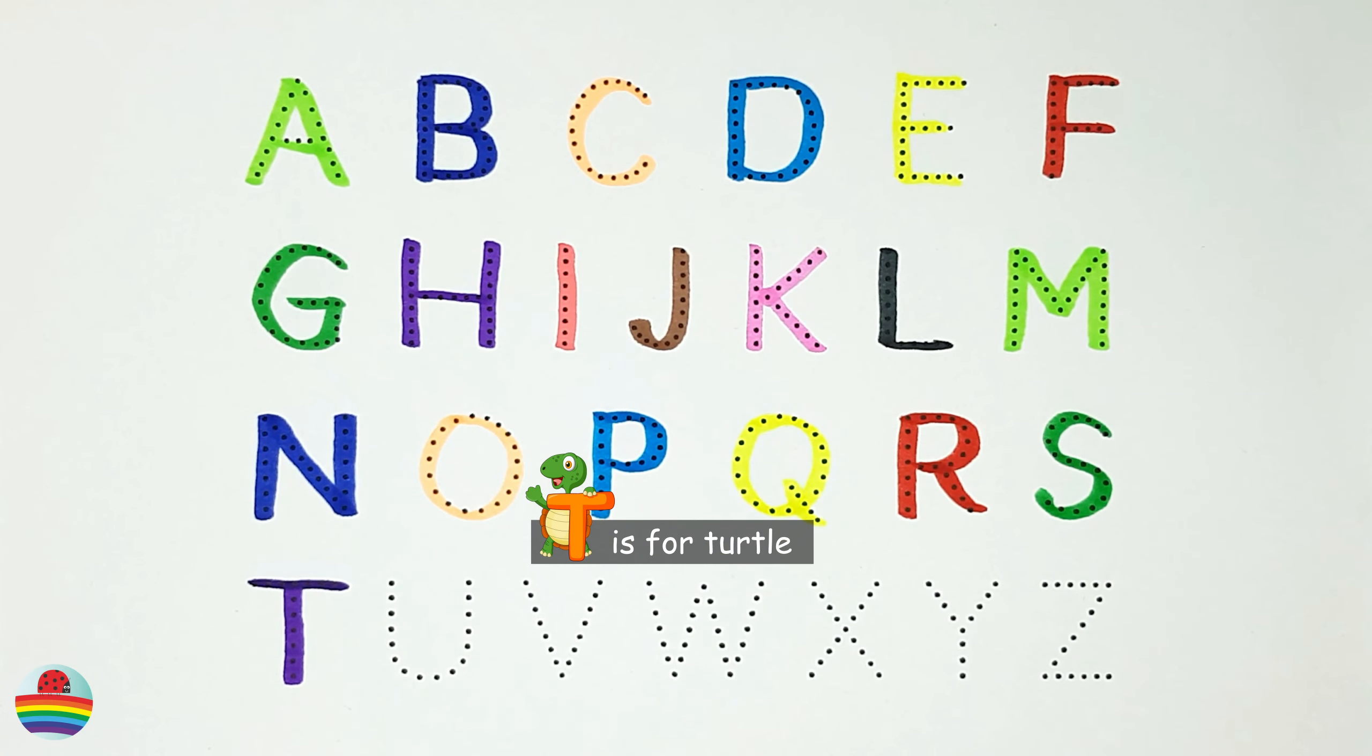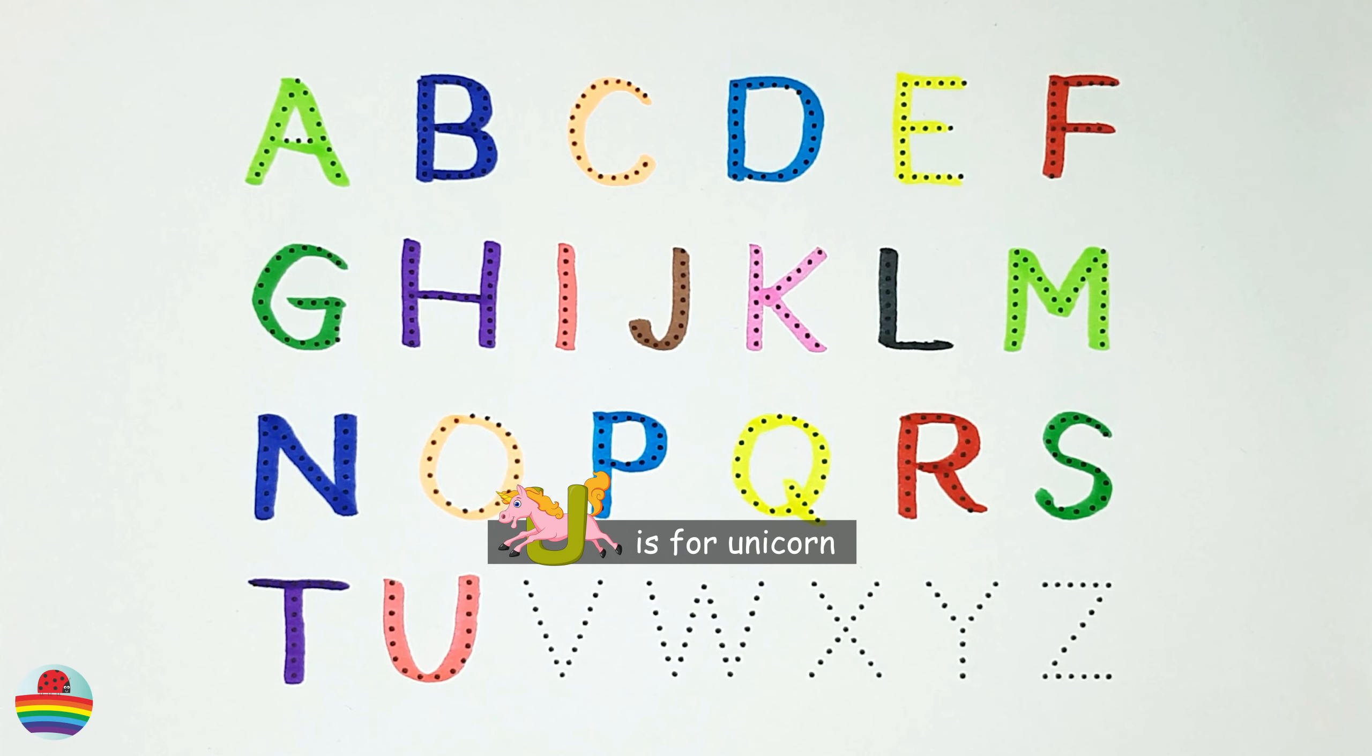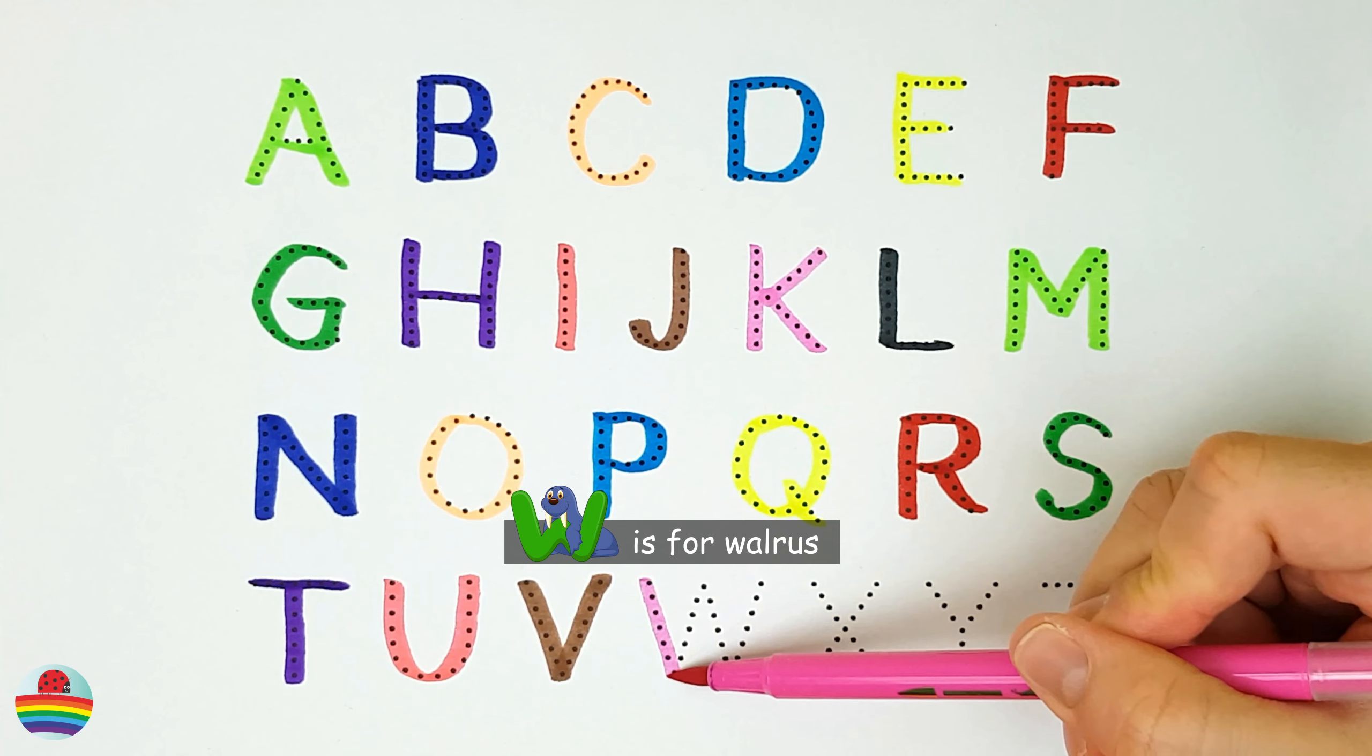T. T is for Turtle. U. U is for Unicorn. V. V is for Vulture.